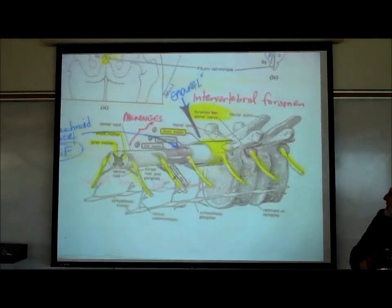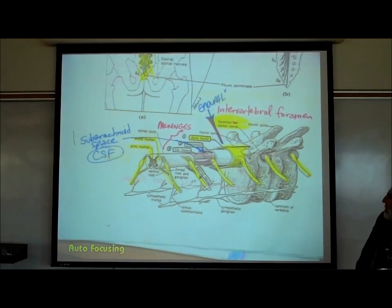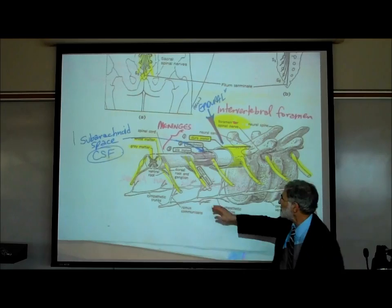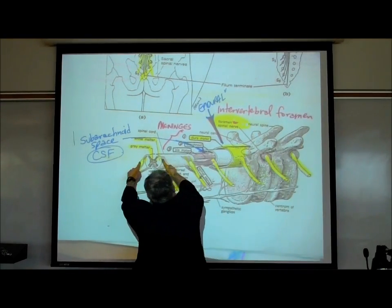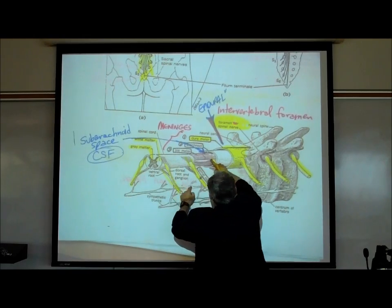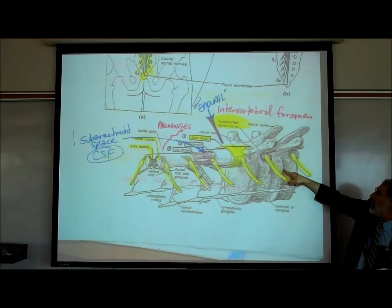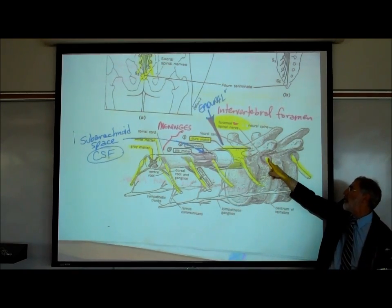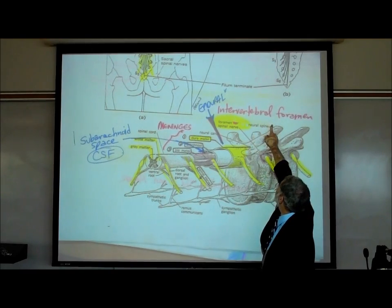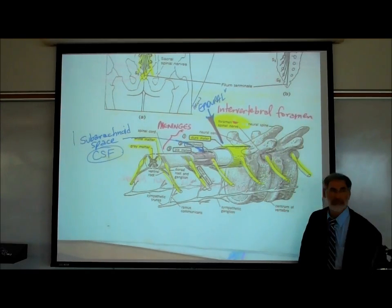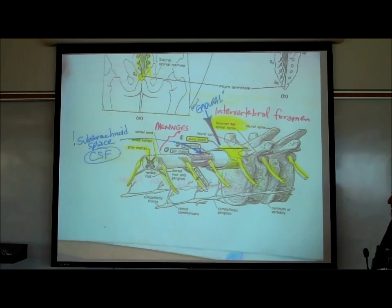Looking at the bottom picture, we can see how the spinal cord passes through the vertebral column, with pairs of spinal nerves coming off at intervals. How do the spinal nerves get out of the vertebral column? There are openings or holes between the vertebrae called intervertebral foramen — holes between the vertebrae through which the spinal nerves can exit.